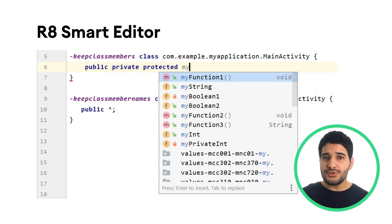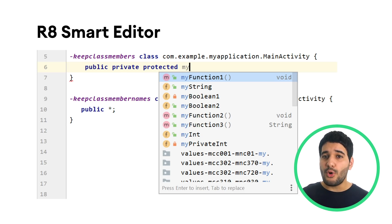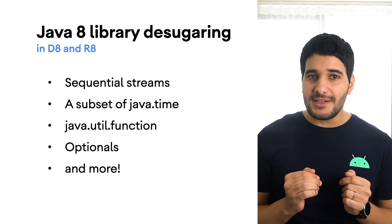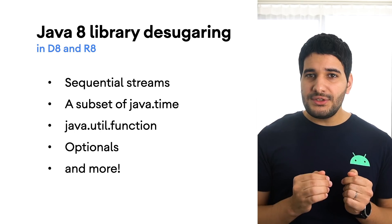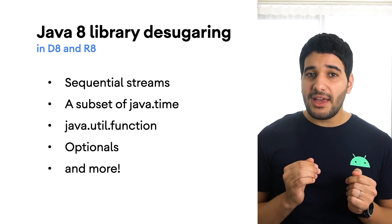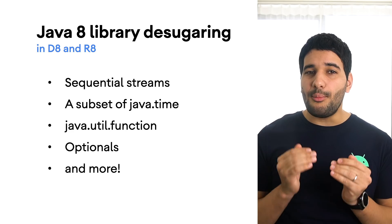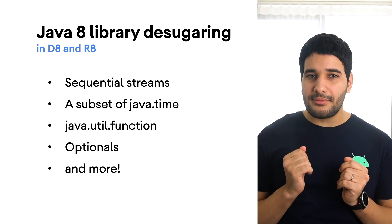The editor also integrates with your Android Studio project to provide full symbol completion for all classes, methods, and fields, and also includes quick navigation and refactoring. Thanks to improvements in the D8 desugaring engine, Android Studio now includes support for a number of Java 8 language APIs without requiring a minimum API for your app.